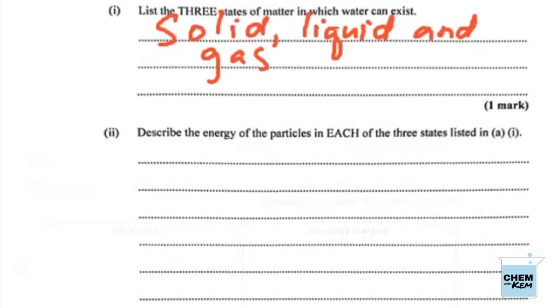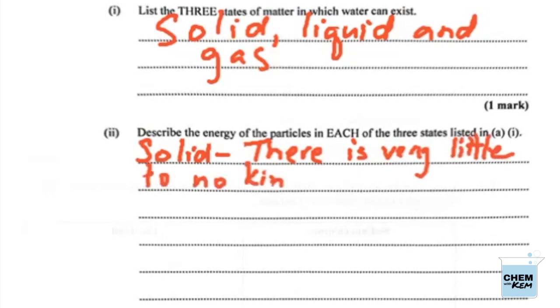Then they want us to describe the energy of the particles in each of the three states listed in part one A above. So let's go with the solid state. In the solid state, the energy we're describing here is the kinetic energy that the particles would have as a result of their motion. In a solid, the particles are arranged in a fixed way held by very strong forces of attraction, so they have nowhere to move to, they can only vibrate. So in a solid there is very little to no kinetic energy.